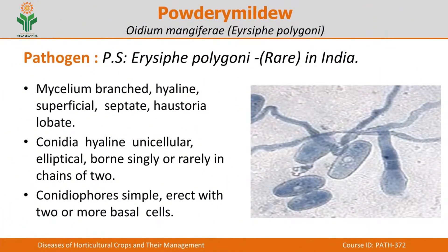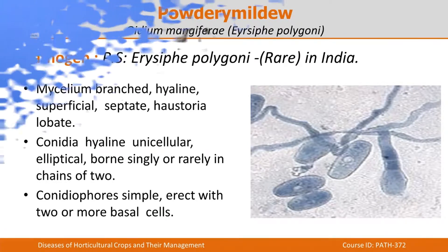The conidia are hyaline and unicellular (single-celled), and they are elliptical. They are born singly, and sometimes in chains of one or two cells. The conidiophores are very simple — they are generally erect, growing straight with two to three basal cells.